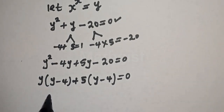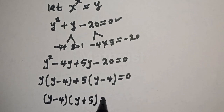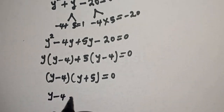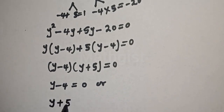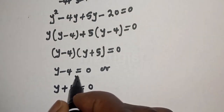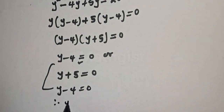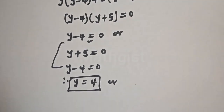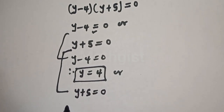Now y minus 4 is common, giving y minus 4, bracket y plus 5, is equal to zero. There are two cases: y minus 4 equals zero, or y plus 5 equals zero. Therefore y is equal to 4, or y is equal to minus 5.